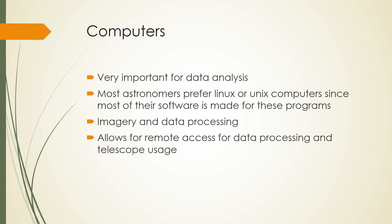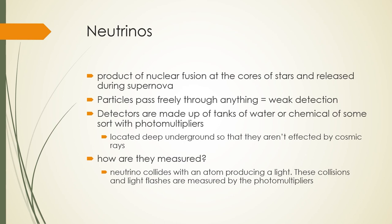Neutrinos are a byproduct of nuclear fission at the cores of stars and are also released during supernovas. These particles pass freely through anything and everything, meaning they have very weak detection. To detect them, we use tanks of water or chemicals with photo multipliers placed underground, so they aren't affected by cosmic rays. Occasionally a neutrino collides with an atom, producing a flash of light, and these collisions and light flashes are measured by the photo multipliers.